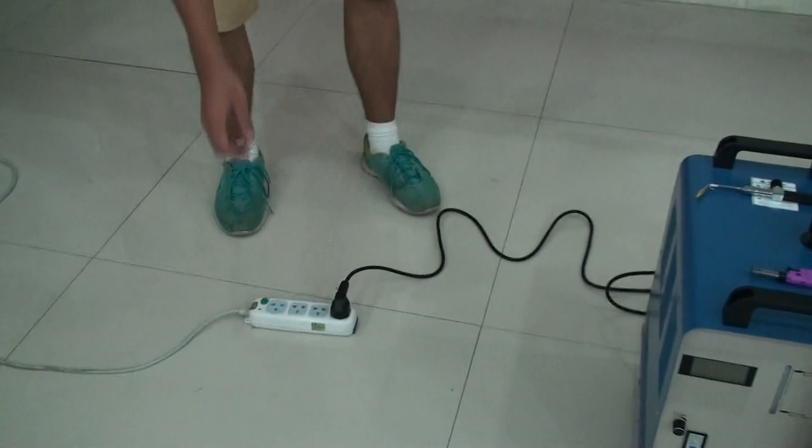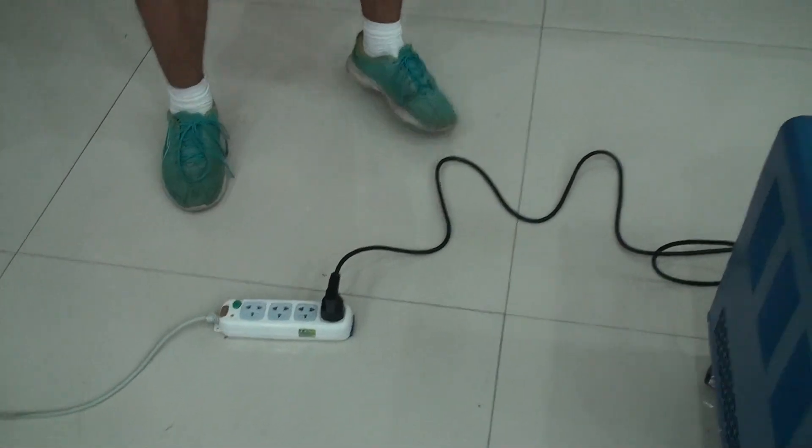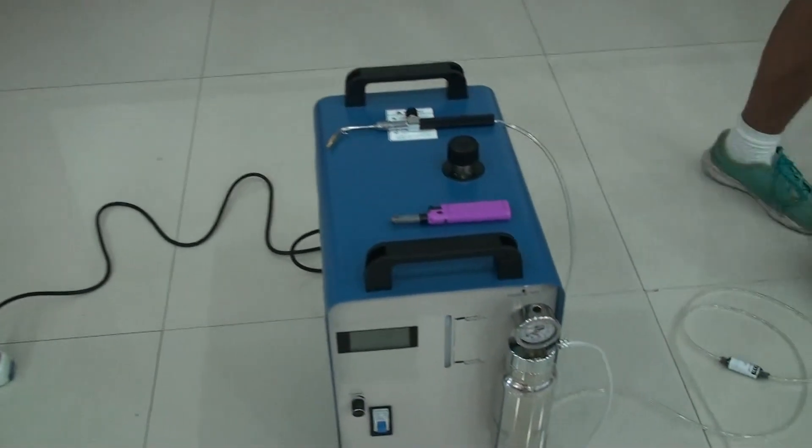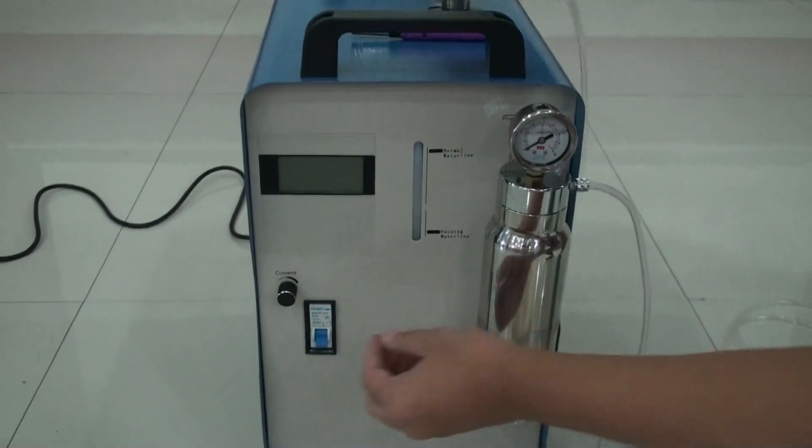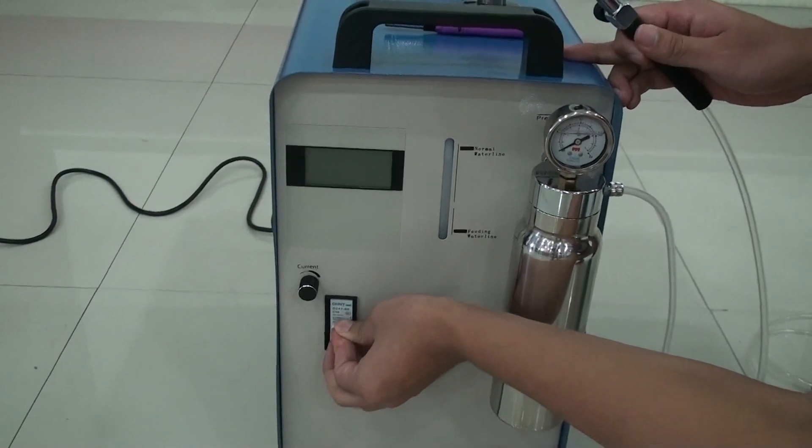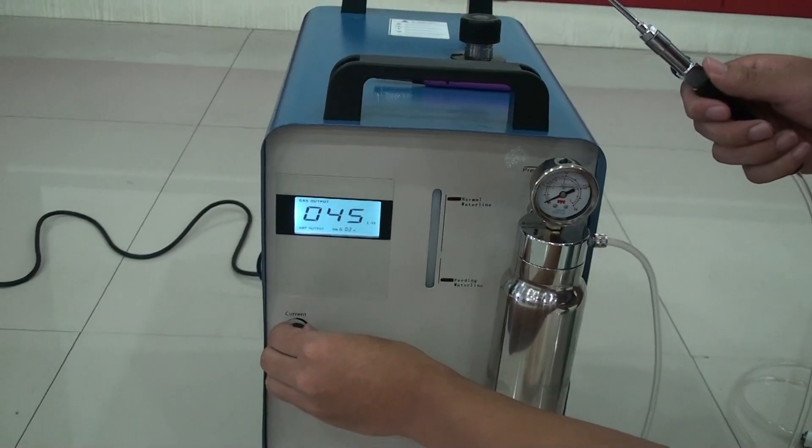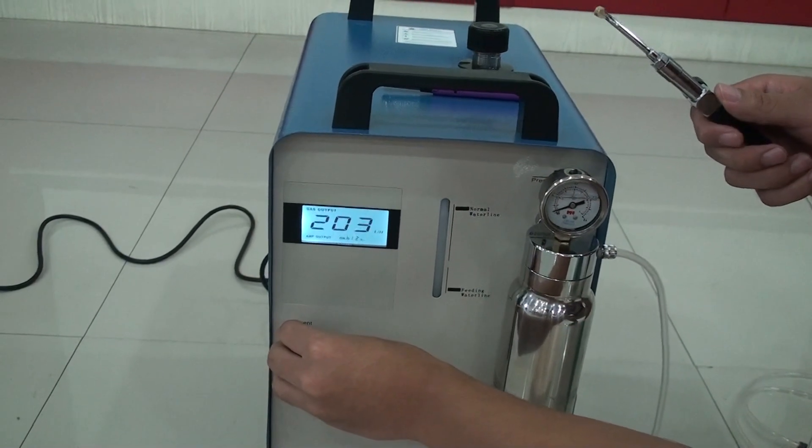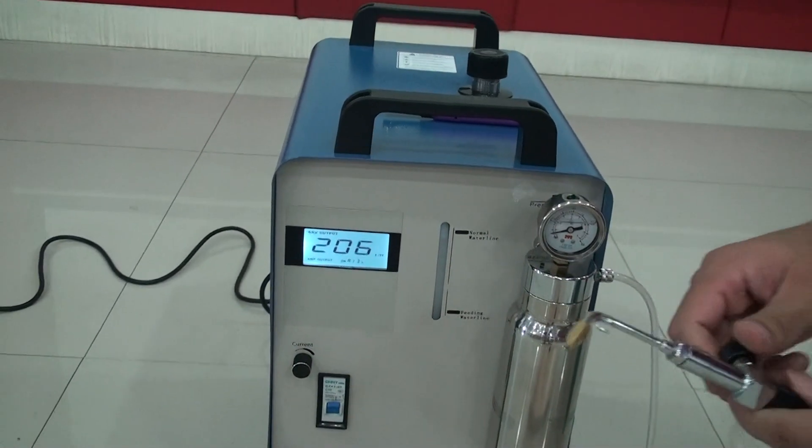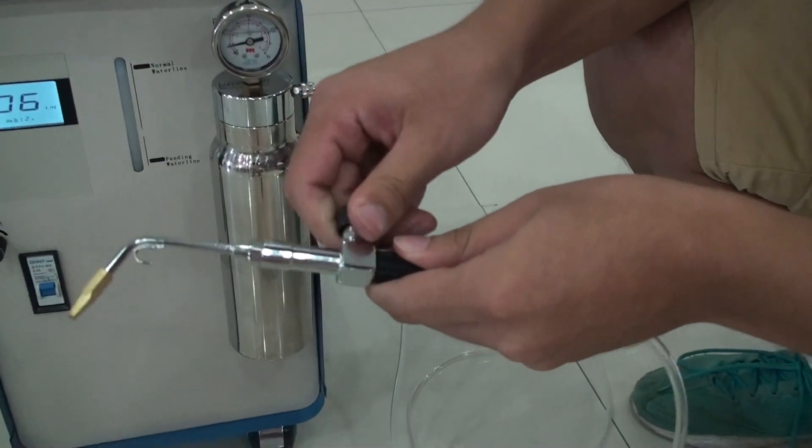First, you have to turn on the power, and then you have to turn on the machine. Our machine's gas output ranges from 0 to 200, and then you have to turn on the flame torch.